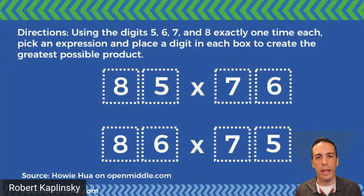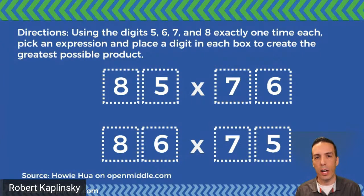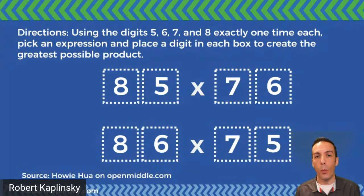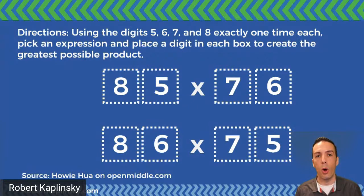Where does the word 'open middle' come from? People might say this is a great open-ended problem, but guess what — this problem is not open-ended. It's actually closed-ended. Problems have a beginning, a middle, and an end. Everyone began with the same problem, so the beginning is closed. The ending is closed as well — there's exactly one right answer: 85 times 76. What's open is the middle. There were many ways kids could approach it: guess and check, using conceptual understanding, thinking about it geometrically. That's what we love about open middle problems.